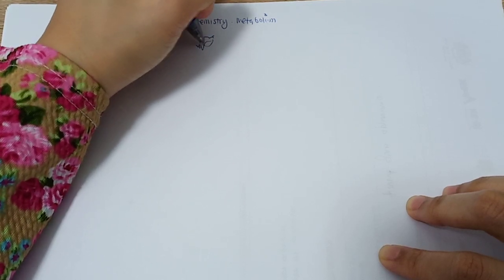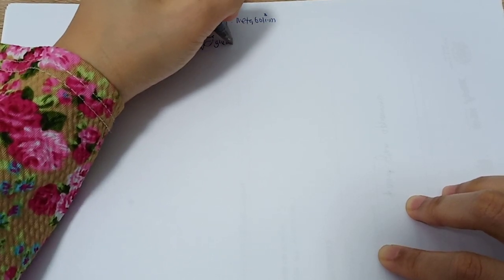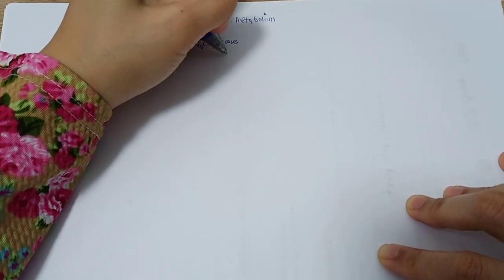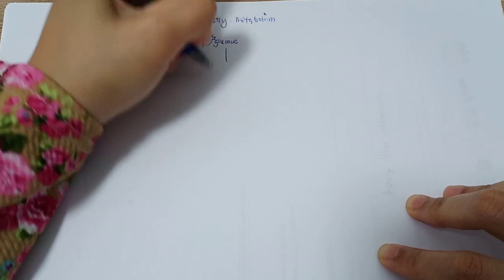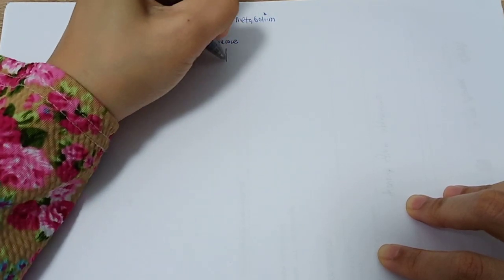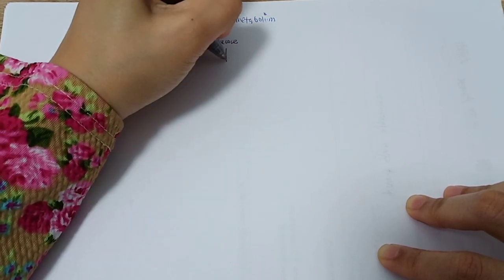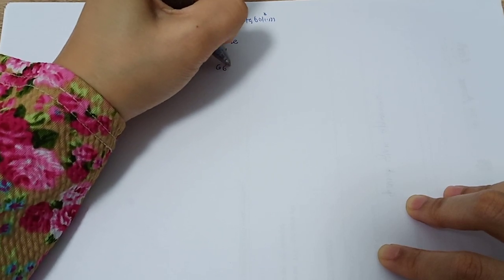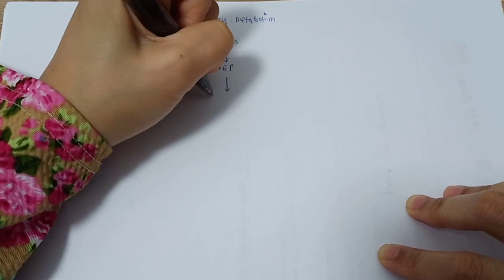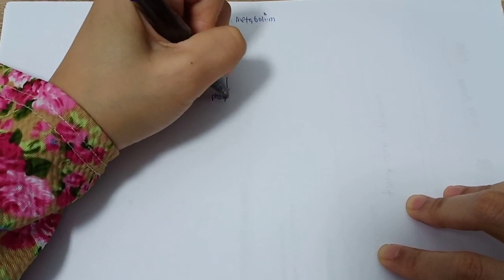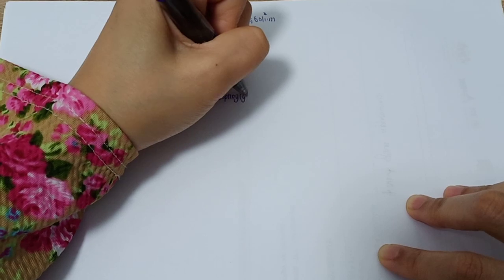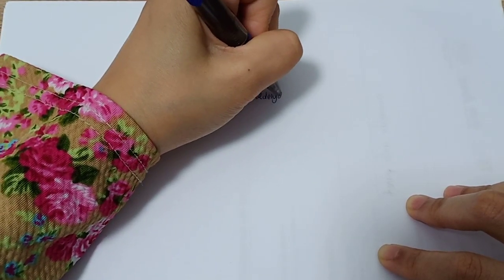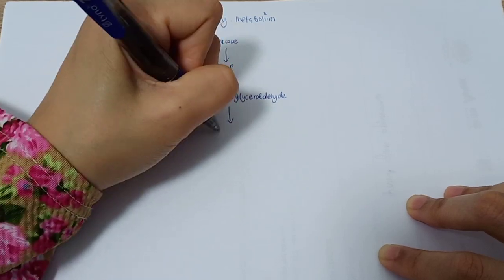First, let's start with glucose. Glucose will actually convert into pyruvate in three simplified steps: first, glucose-6-phosphate, then phosphoglycerol aldehyde, and finally pyruvate.